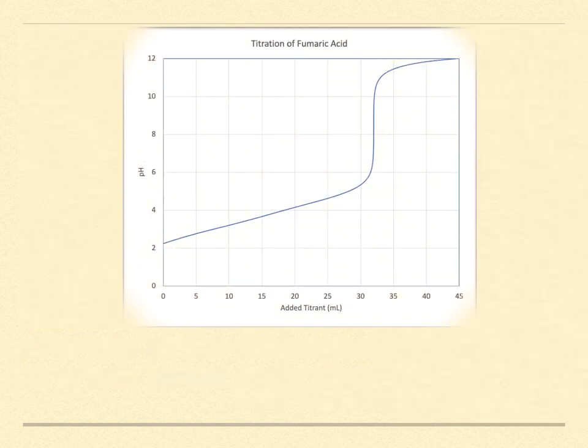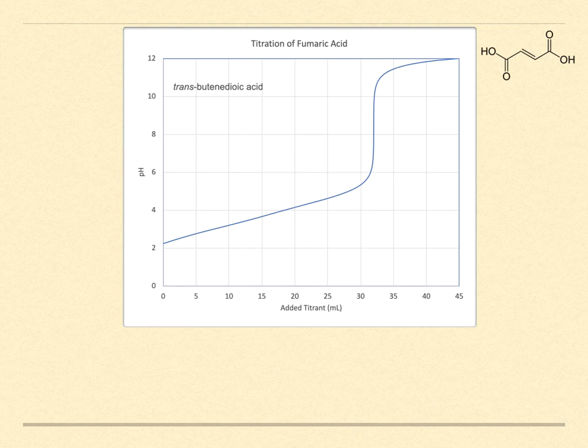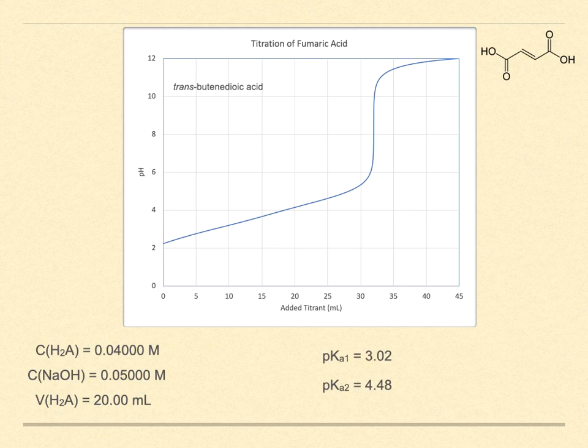Here's the titration of fumaric acid. Its systematic name is trans-butenedioic acid. It is diprotic. The titration parameters are the same as for the sulfurous acid except for the pKa values. This time, they are 3.02 and 4.48. Remember for sulfurous acid, they were about 1.9 and 7.2. These Ka values are so close together that the titration experiment cannot distinguish them. The second equivalence point is still at 32 milliliters. And if you look really closely at 16 milliliters, you might be able to convince yourself that there's something there. But if you did not know what you were titrating, you might believe instead that it was a monoprotic acid with twice the formal concentration.